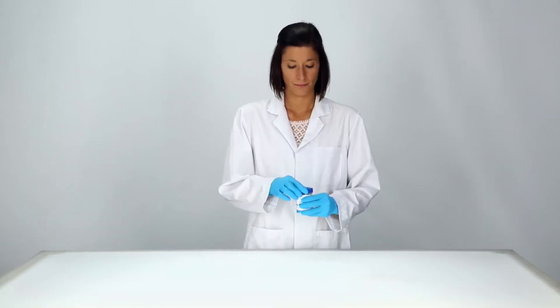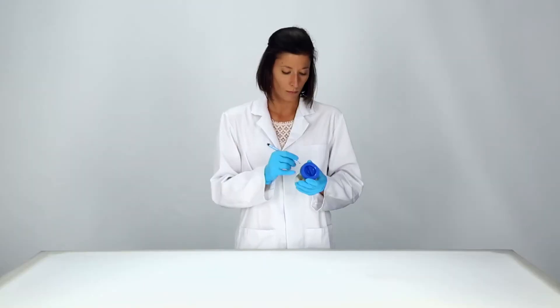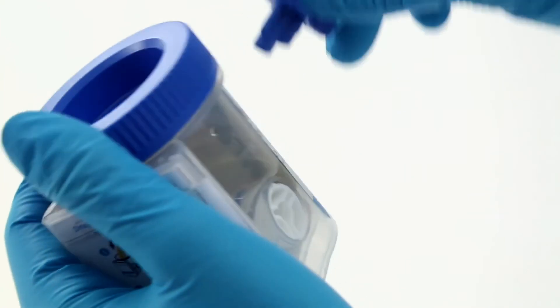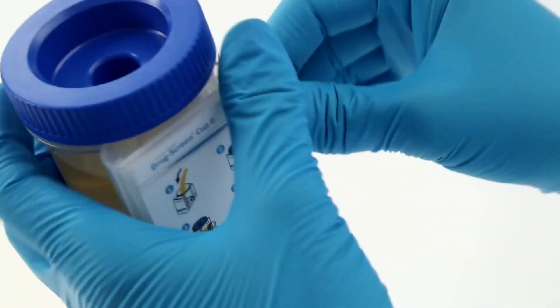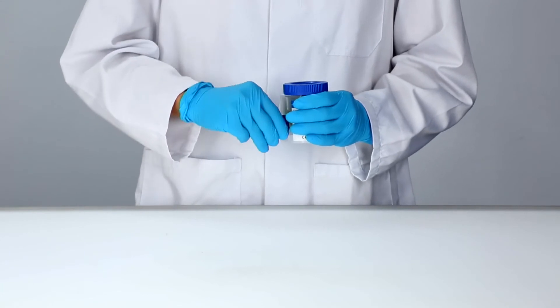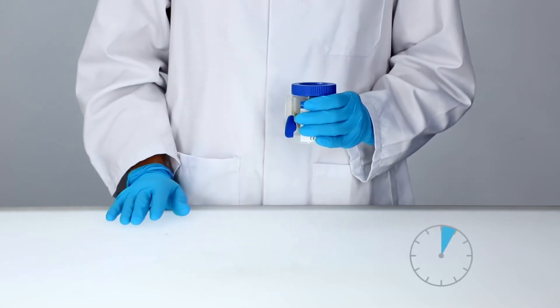Secure the lid before starting the test. Fill in the patient's details on the label. Remove the key from the lid, put it in the keyhole provided and turn it 180 degrees clockwise. Start your timer immediately.